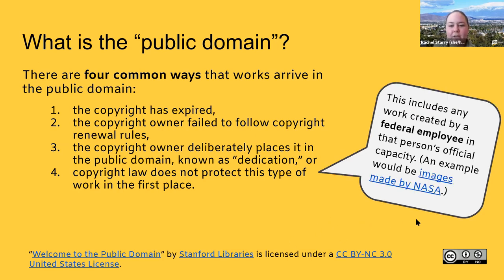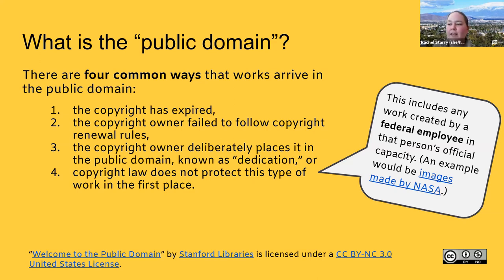A fourth case for how something could be in the public domain is that copyright law does not protect that type of work in the first place. This includes things that are simply not copyrightable at all — like ideas, which have to be in fixed form, or facts and factual information. No one owns basic numerical statistics, like the distance between the earth and the sun — that's just a fact. Also not copyrightable: works created by federal employees in the course of their job duties, such as images created by NASA, the USDA, or other governmental agencies.